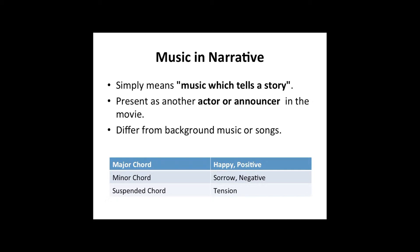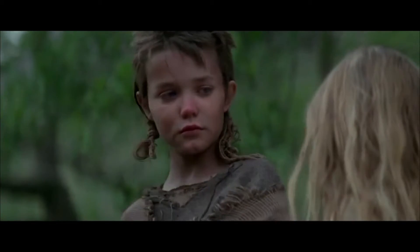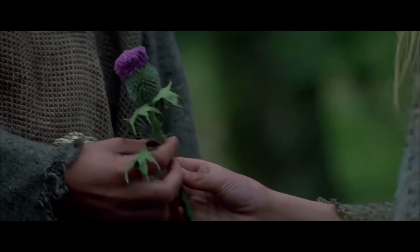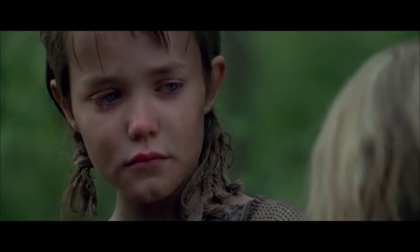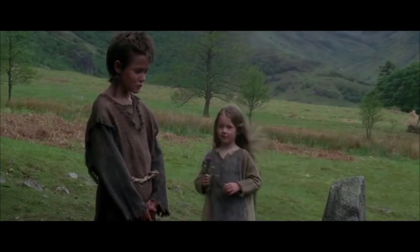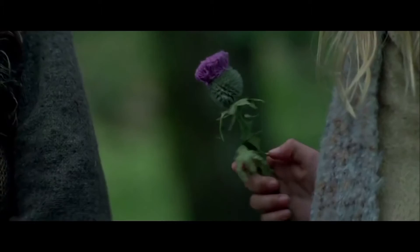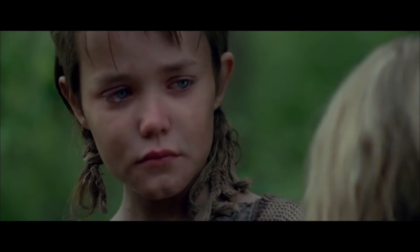The first example I made compares two different narrative music versions in the movie Braveheart. In the first version we can see, it seems that the little girl Molly tried to confess her love to the little boy William, and William feels touched and tears down in happiness. In the original version, actually William just lost his father and Molly tried to comfort him, and William tears down in sadness.